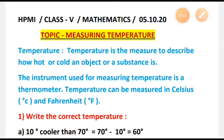Now students, let us work out a few sums. Here is a worksheet where you have the definition of temperature. You are going to write: temperature is a measure to describe how hot or cold an object or substance is, and the instrument used for measuring temperature is called the thermometer. Temperature can be measured in Celsius and Fahrenheit. The thermometer consists of the liquid metal called mercury present in it.